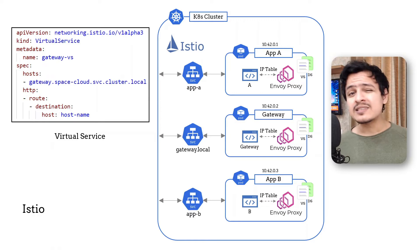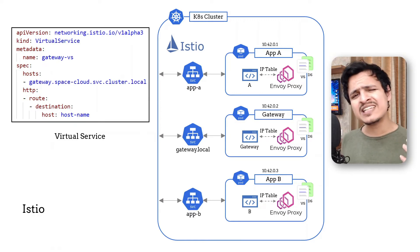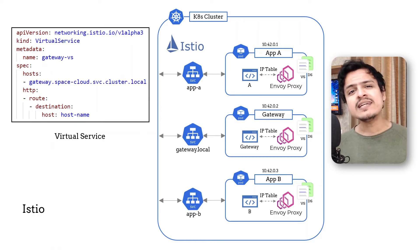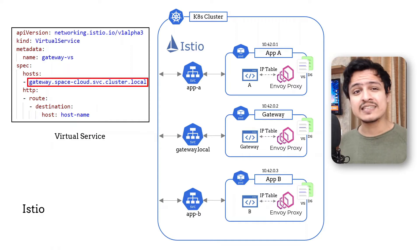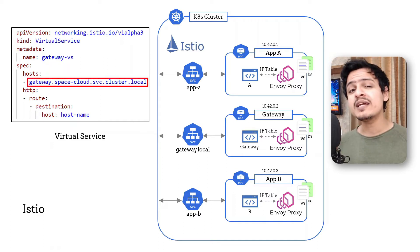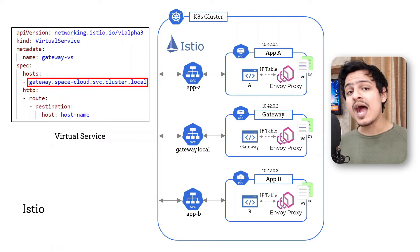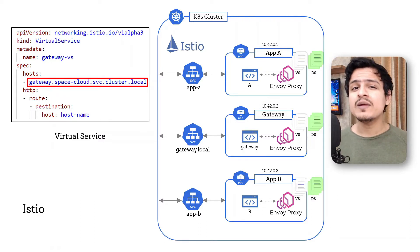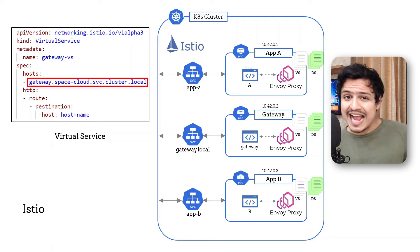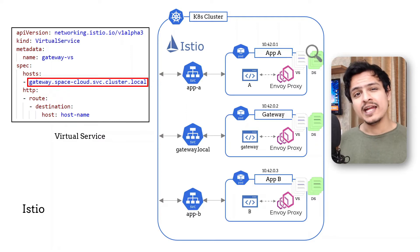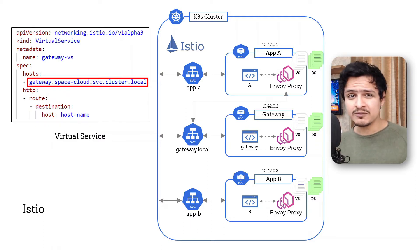If you have a look at the specifications of a virtual service, or even a destination rule for that matter, you see that the first thing it accepts is a list of hosts this config is applicable to. This is where you will put your service domain name. We can't really use labels here — tell me why in the comments below. A single proxy will have a copy of all the virtual services present in the cluster, and whenever its app makes an outbound request, it tries to match which virtual service is applicable based on the domain name of the request.